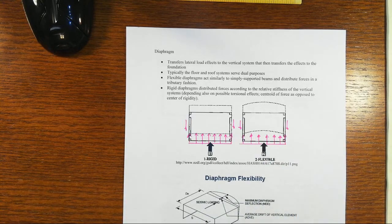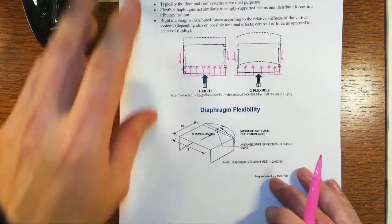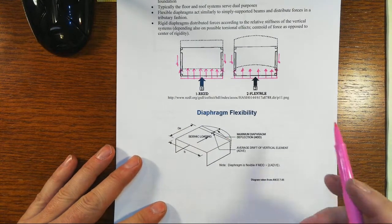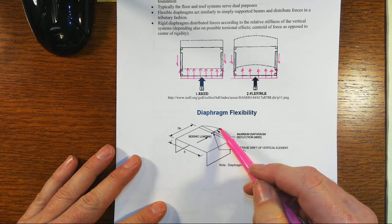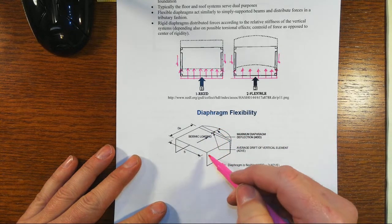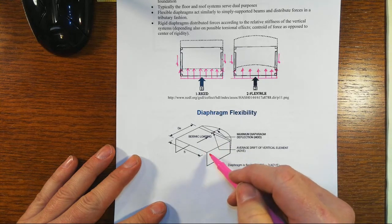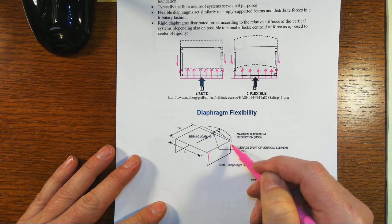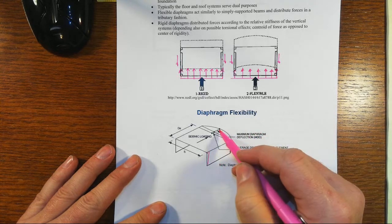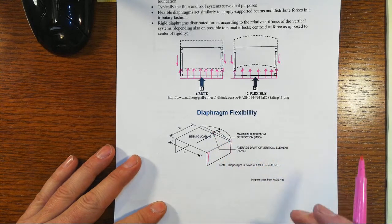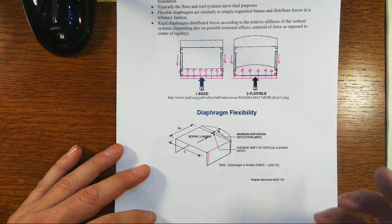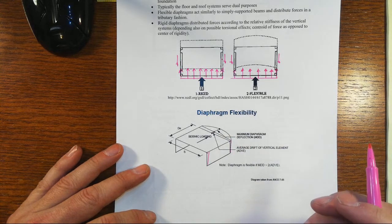Now, how do you know if it's a flexible or a rigid diaphragm? There's a variety of different kinds of definitions out there, but the basic one is that if you compare how much the diaphragm itself flexes compared to how much offset you get from just the drift of the vertical pieces, and you compare those two, well, if the diaphragm deflection is more than twice the average coming from the drift of the vertical elements, then you'd say that that's a flexible diaphragm.